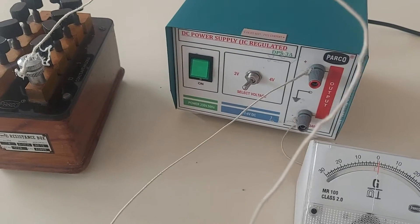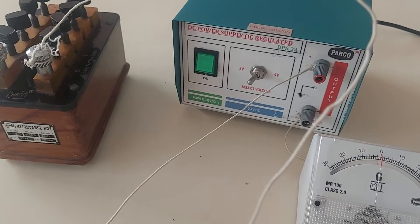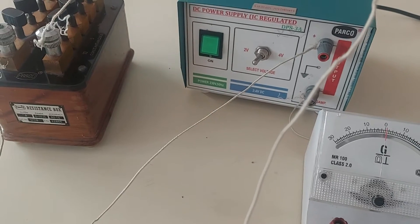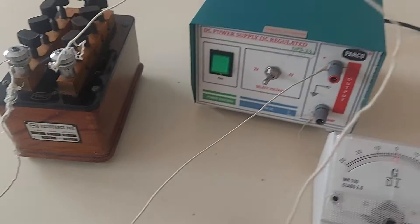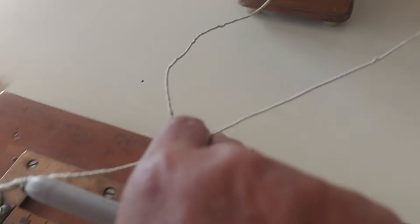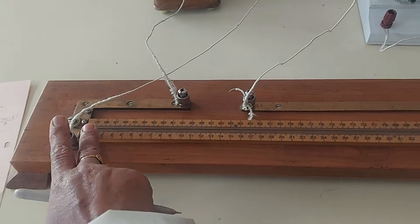The supply is using 2 volt potential difference for the circuit. Don't make it more. It will heat up the wire, which we don't require and will also change the value of resistance. So the positive terminal is connected to this left end of the meter bridge.